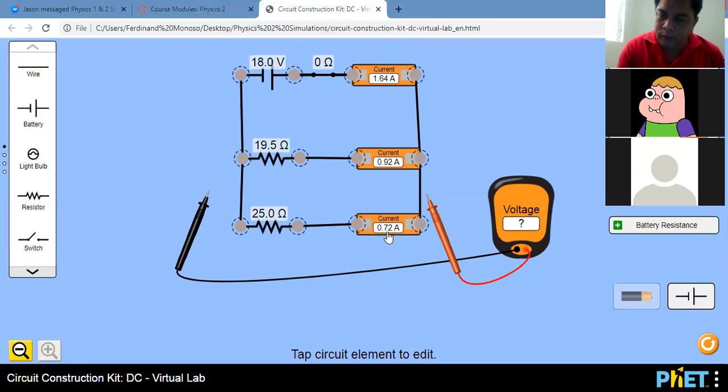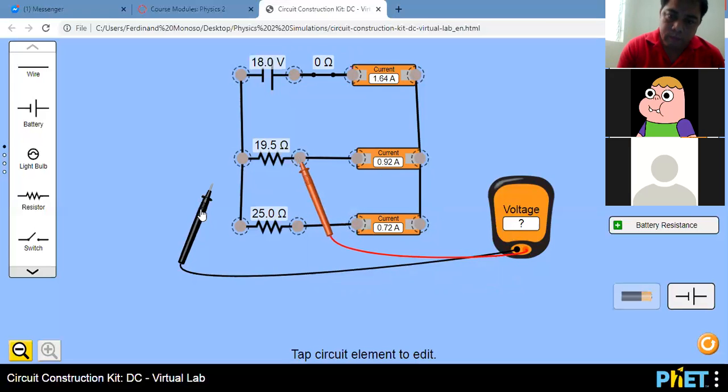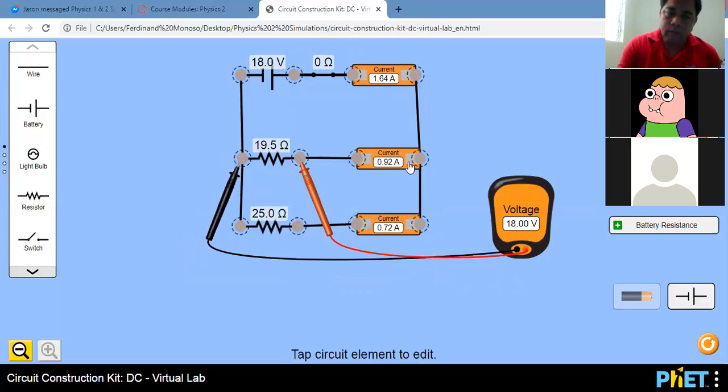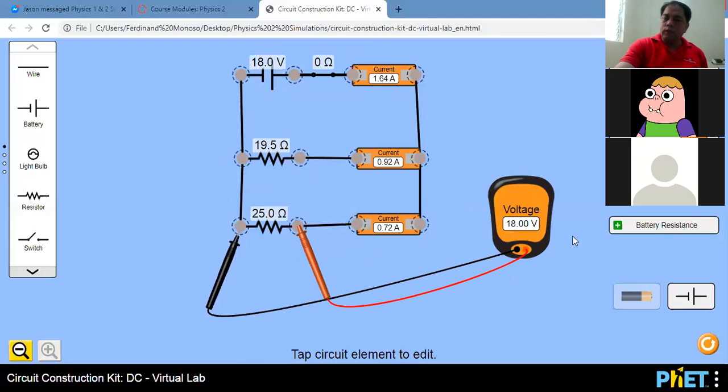I1. Yes, sir. I2. A1, sir. Our total current is 1.64. Let's check our voltage, V1. V1 now is 18. Let's check our V2. So both of them are 18 volts.